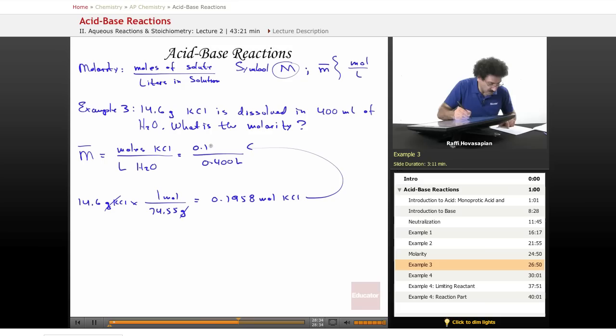0.1958 mole of KCl dissolved in 0.4 liters. I do the division, and I end up with 0.49 moles per liter, or I can put 0.49 molar. We often say molar solution. So that's it.